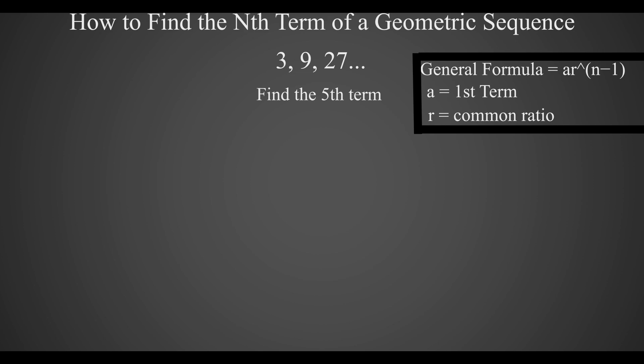Since the first term is 3, a will be equal to 3, and since the numbers are being multiplied by 3 in this sequence, r will also be 3.